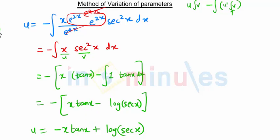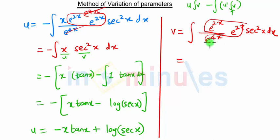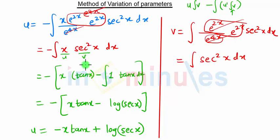So this is our u. After u, we will find v. For v, we substitute x equal to e^(2x)·sec²x. The e^(2x) and e^(4x) terms get cancelled and we get only the integration of sec²x·dx. The integration of sec²x·dx is tan x, so our v is tan x.